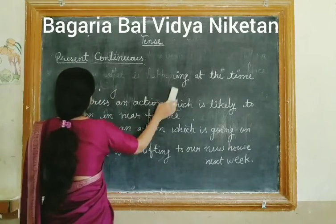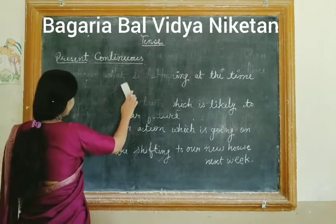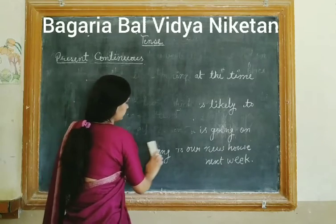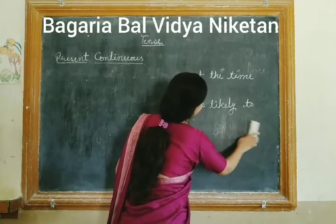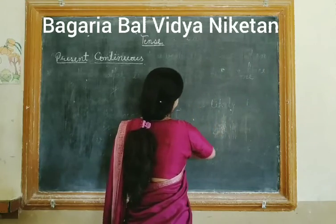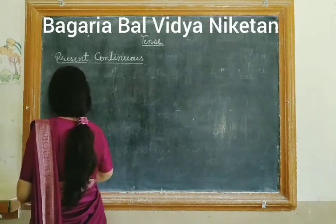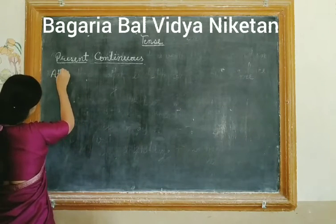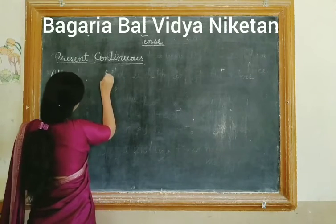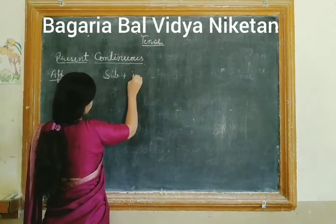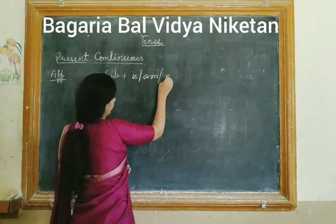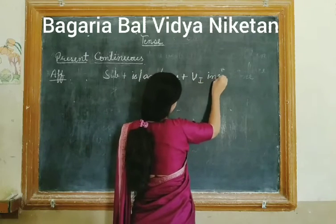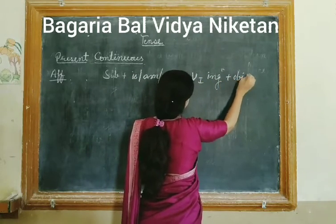Ab baat karte hain iske structure ki. The affirmative formula is: Subject + is/am/are + verb's first form with -ing + object. For example: 'She is writing a letter.' Subject plus helping verb plus verb ki first form mein -ing, and then object — yeh mera full structure ho gaya.